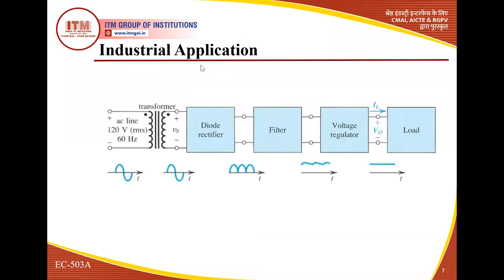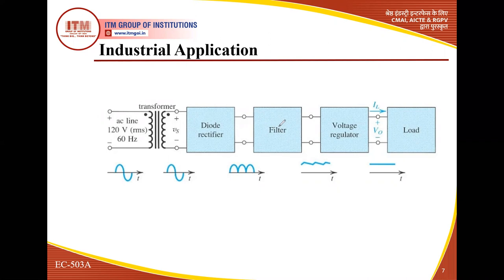Here are the industrial applications. We consider one application — the regulated power supply. The input is given to a rectifier which converts AC into DC. But it is not pure DC, so it is passed through a filter. This filter reduces the AC component present in the DC — that is why it is known as pulsating DC. We want pure DC, so we pass the pulsating DC through the filter. The filter reduces the AC level, then it passes through a voltage regulator and we get pure DC output to the load.